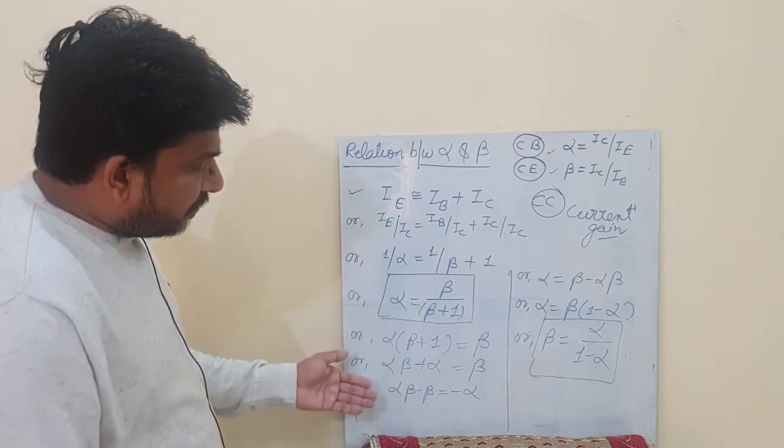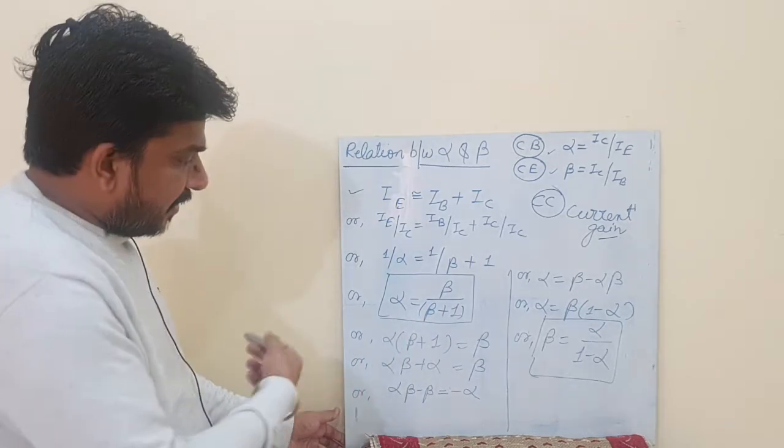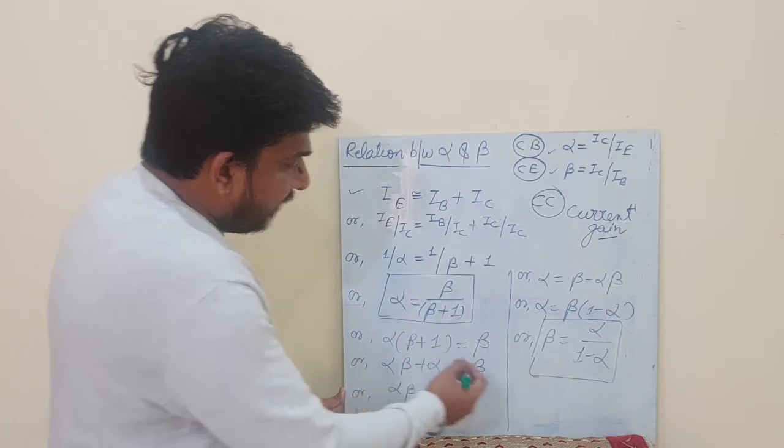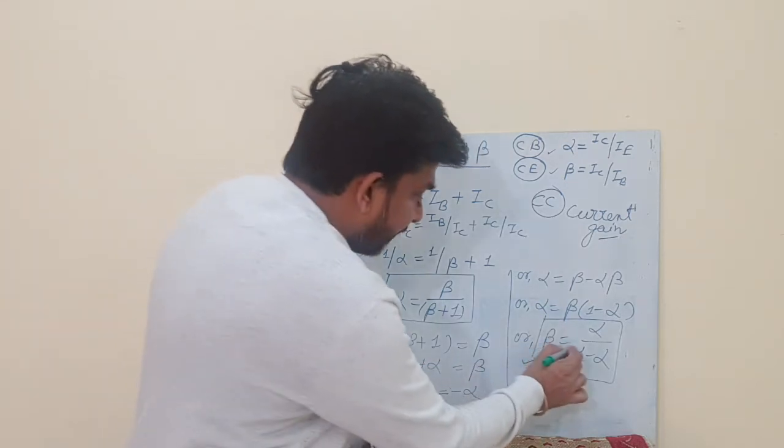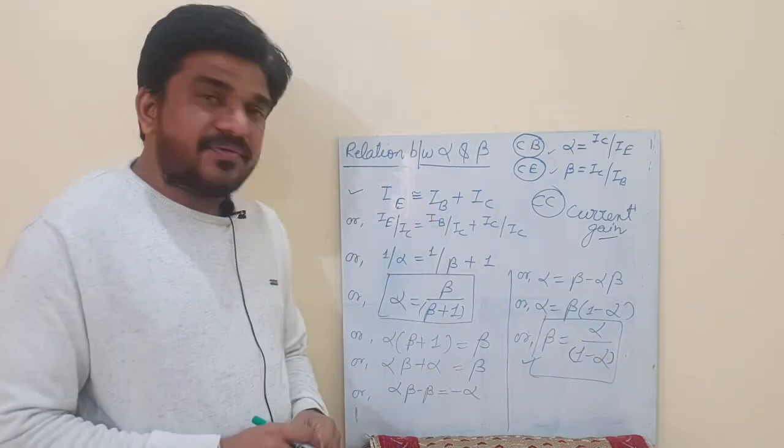Now we can solve this further. We are doing simple transfer from one side to another side. Through this calculation we can reach that beta equals alpha upon 1 minus alpha. So this is the relation between alpha and beta.